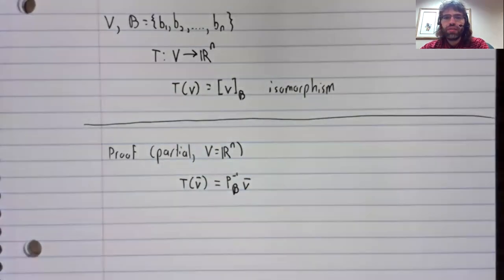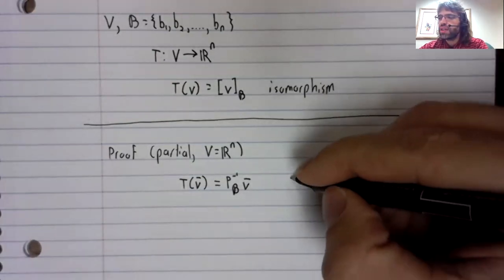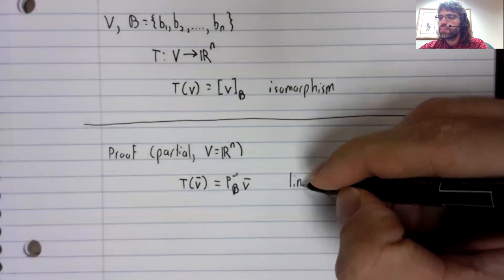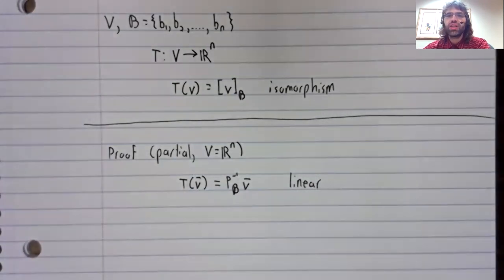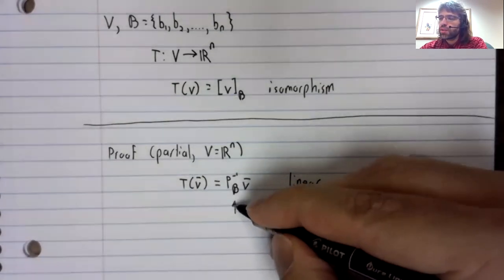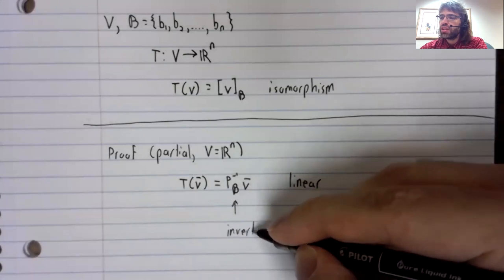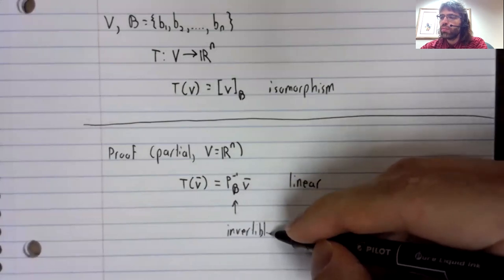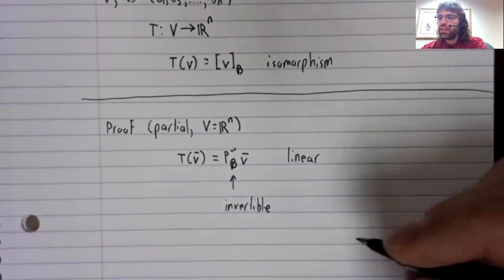T of V is a matrix times V, and this is linear. This matrix is invertible. Its inverse is P sub B.